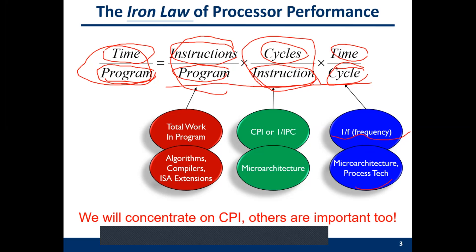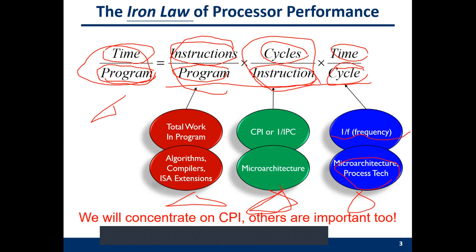The last factor is process technology — a more advanced process may give you a higher frequency. When evaluating CPU performance, software (compiler/algorithm), computer architecture (CPI/IPC), and device technology (frequency) all have a huge impact. In this lecture, we focus only on CPI and IPC. We assume the same compiler, same software, and the same frequency, so device-level differences are held constant.